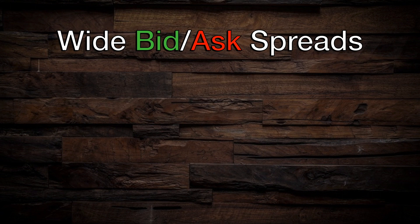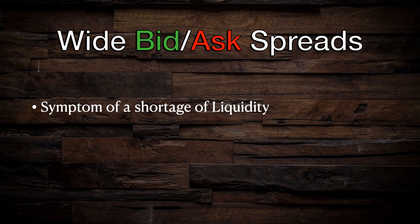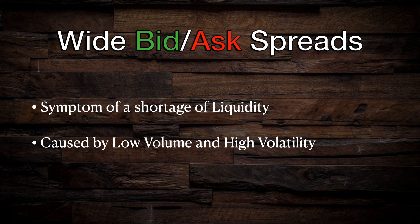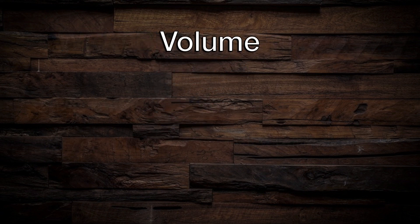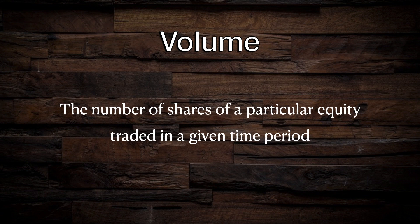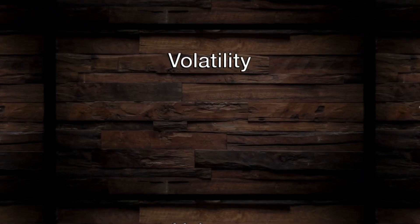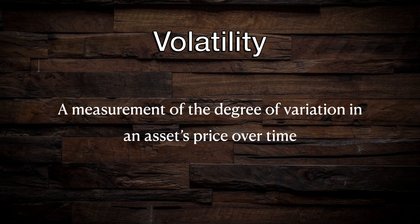Wide bid-ask spreads are a symptom of a shortage of liquidity and are usually caused by two things: low volume and/or high volatility. Trading volume is the number of shares traded in a given time period. Heavily traded ETFs like SPY can trade around 65 million shares per day on average, as opposed to lesser known company stocks that might trade less than 1 million shares per day. Volatility is a measurement of the degree of variation of an asset's price over time. If a stock price is trading erratically due to breaking news or turmoil in the marketplace, there may be less consensus on what that stock is currently worth, and this can cause the bid-ask spread to become wider.